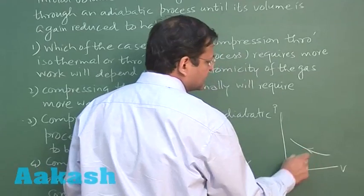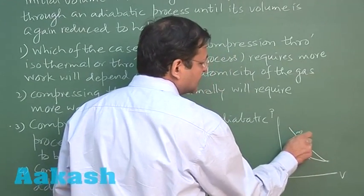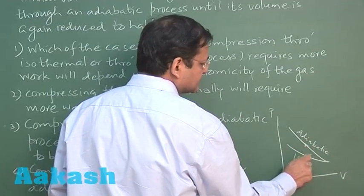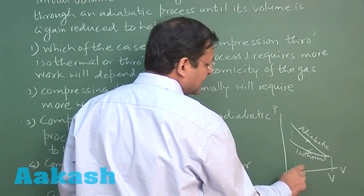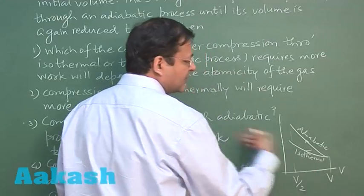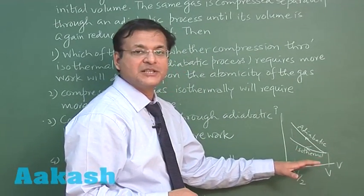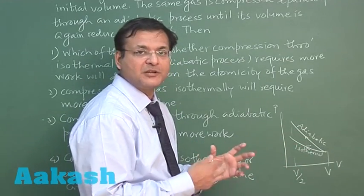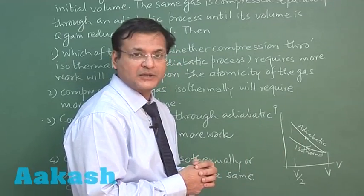So if isothermal compression is something like this, then adiabatic compression is something like this. If you remember, adiabatic and this is isothermal. You are starting off from some particular volume V and you are going up to volume V by 2. So you can clearly see that the area under isothermal compression is lesser compared to adiabatic compression. So adiabatic or fast compression will be requiring more work to be done compared to isothermal work done.